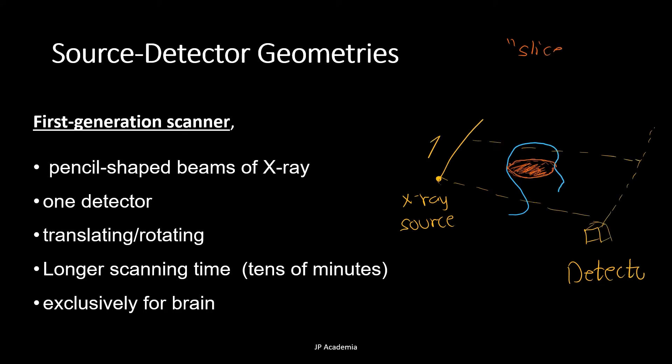So this is called the first generation scanner, illustrated here in the drawing at the right. So this is described by a pencil-shaped beams of X-ray. So let's say we have this X-ray source, then we have this pencil beam. We have this single detector, then it translates before it rotates to another angle. This type of scanner, we have longer scanning time, about tens of minutes. And this is used exclusively for brain.